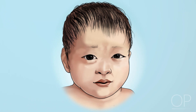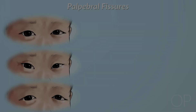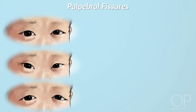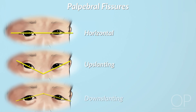Now check the infant's eyes, again beginning with an inspection. Do they appear widely spaced? Does the opening of the eye, called the palpebral fissure, point upwards or downwards? Subtle variations in eye spacing and rotation are normal and may be inherited from healthy parents.